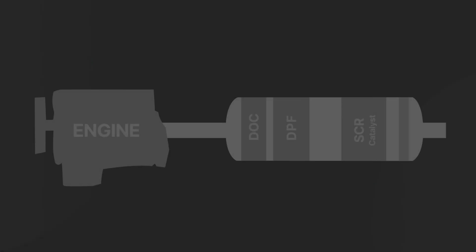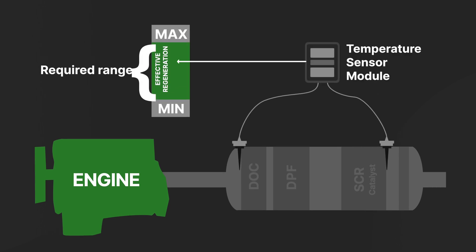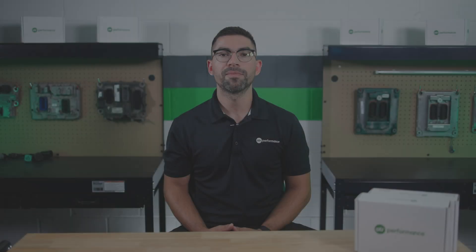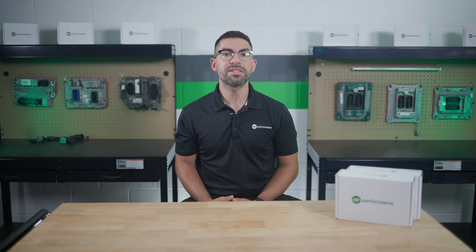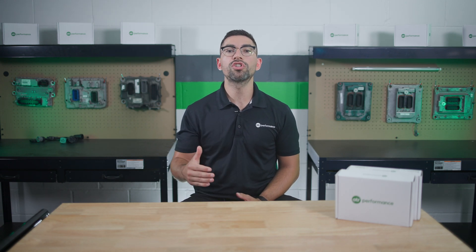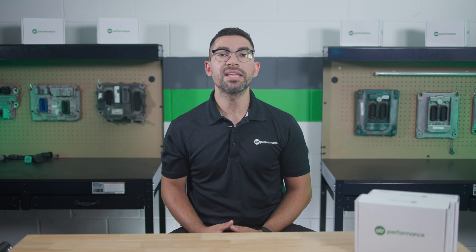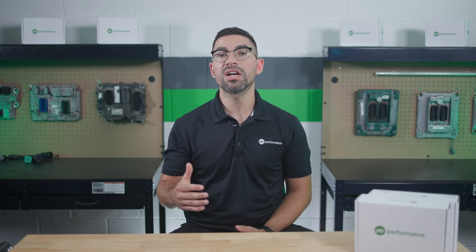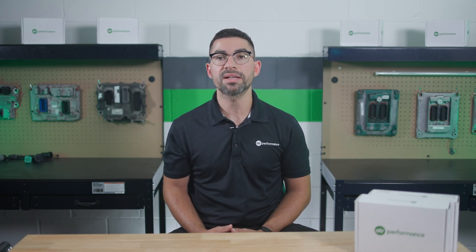This diagnostic runs continuously while the engine is operating. It ensures that the aftertreatment system temperatures are within the required range for effective regeneration. The engine control module sets this fault code when it detects that the aftertreatment temperatures are too low for an extended period while driving, indicating that the exhaust gases are not hot enough to support the regeneration process.